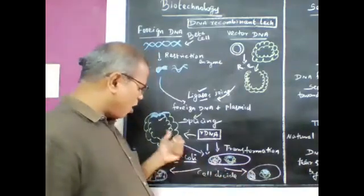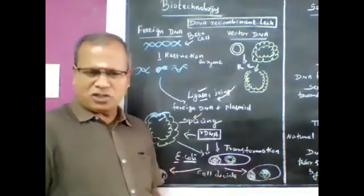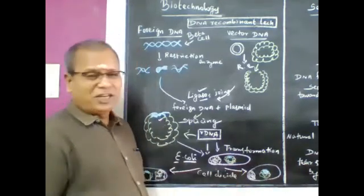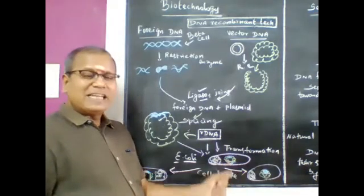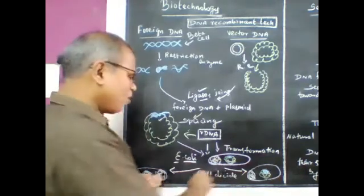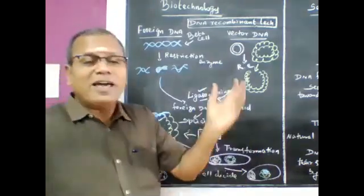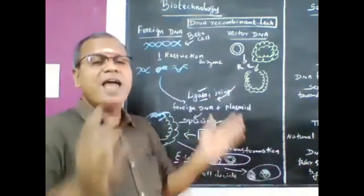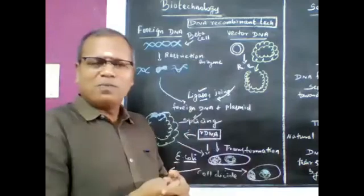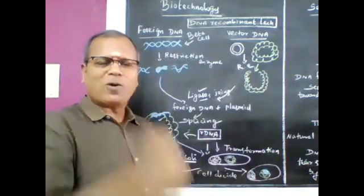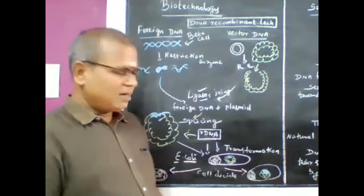This bacterium takes up the rDNA. The E. coli bacteria now possesses the foreign gene, so the character of E. coli is changed. The insulin-producing gene is now inside it. Through binary fission — cell division — E. coli divides: one becomes two, two becomes four, and so on. If you increase the culture, you get insulin from E. coli. That insulin is said to be Humulin.